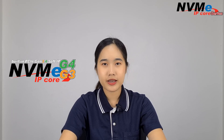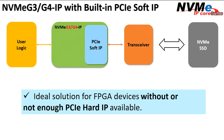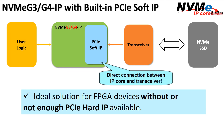The last one is NVMe Gen3 and Gen4 with PCIe soft IP, which could help users overcome the limited number of PCIe hard IPs on FPGA boards by utilizing the transceiver on the device instead. This feature enables the possibility to build a multi-channel RAID system for your design.